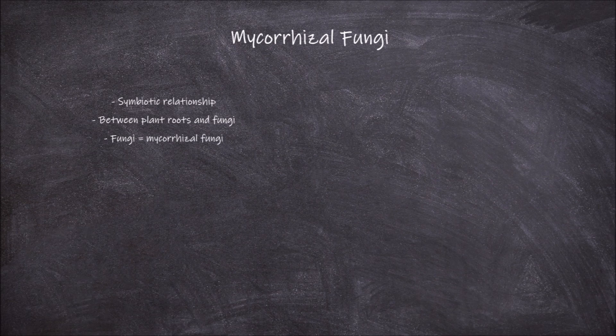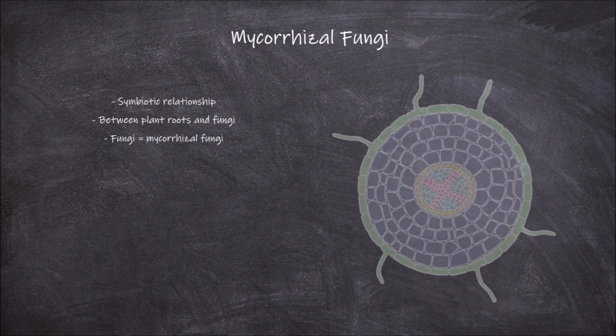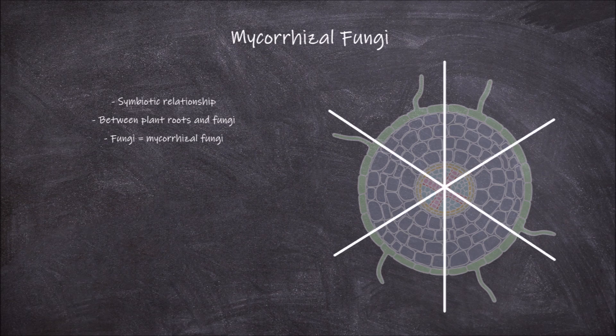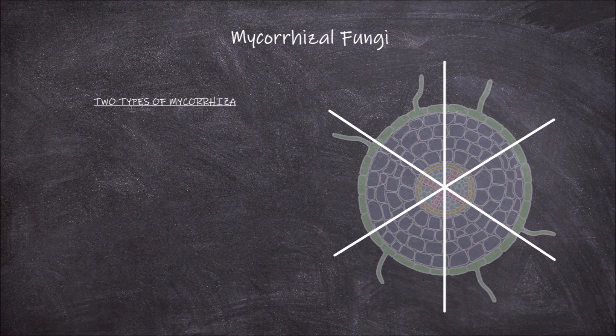Here we have a cross section of a plant root so we can look at the differences between the different forms of mycorrhiza. There are two main types of mycorrhiza: ectomycorrhizae and endomycorrhizae.